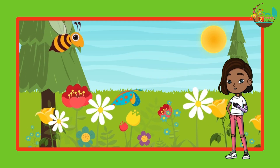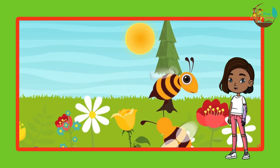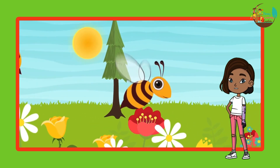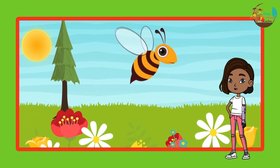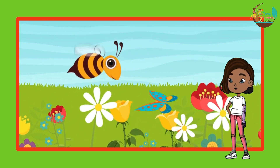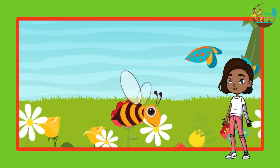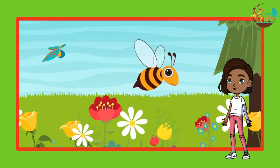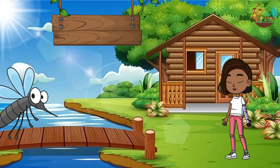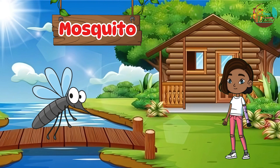Creeping, crawling, buzzing by, tiny creatures low and high. Flying, jumping all around, in the sky or on the ground. Can you see a mosquito?